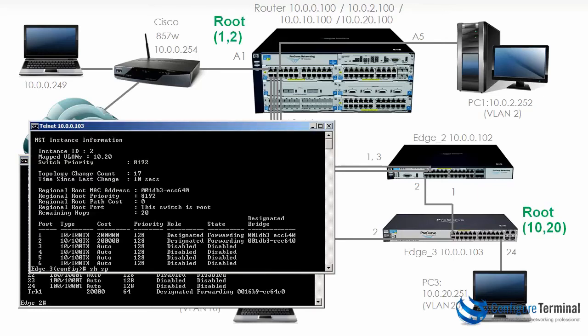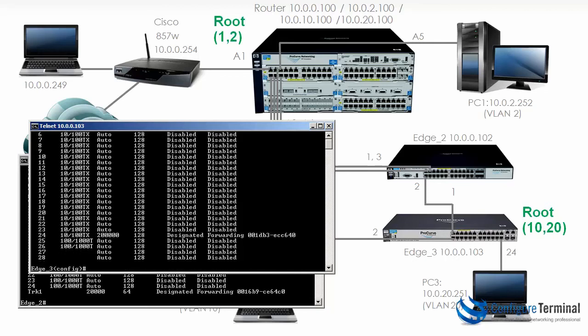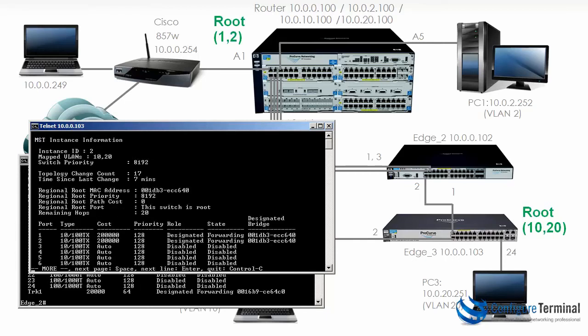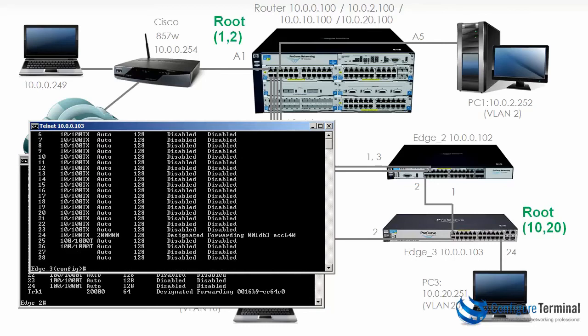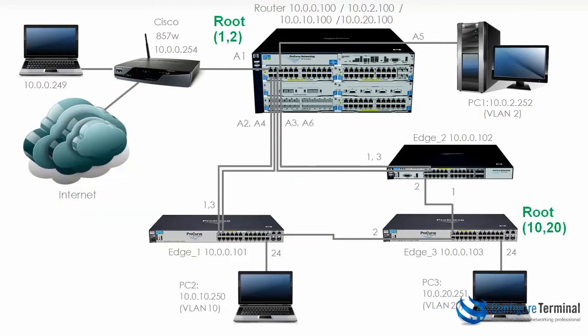On edge 3, 'show spanning-tree instance 1' shows that port 2 is blocking on instance 1 — edge 3 is not the root on instance 1, it's the root on instance 2, so port 2 is blocking on instance 1 while the other ports are forwarding. But looking at instance 2, port 2 is forwarding as a designated port, because this switch is the root for instance 2.